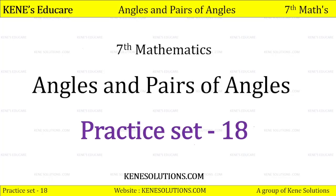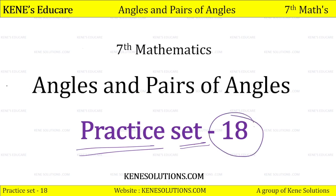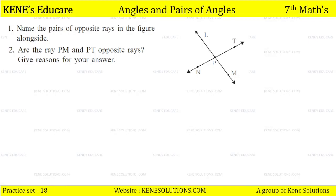Hello students and welcome all of you to Kenes Educator. Today we are solving practice set number 18 of your chapter on angles and pairs of angles. This chapter is from your 7th mathematics, and this practice set number 18 is based on the concept of opposite rays. So I will start with practice set from question number 1.